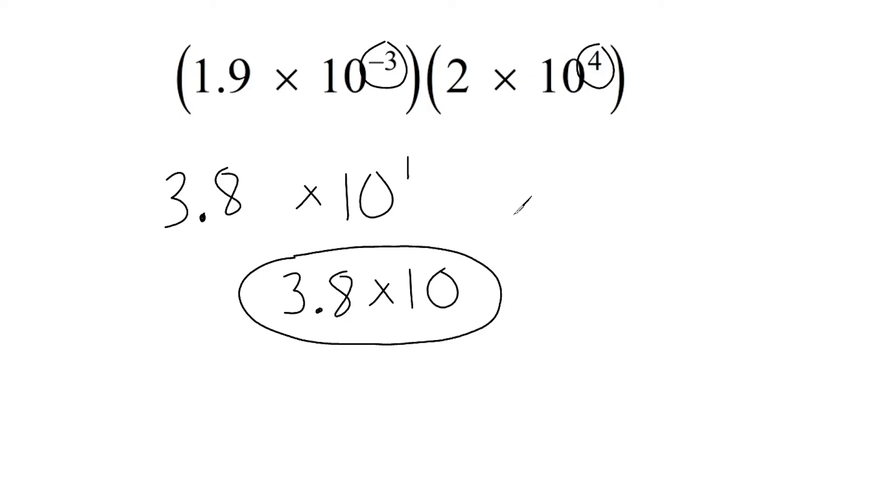So that's all there is to it. You simply just multiply the two coefficients together to get your product. And then you bring down your base 10 and add the exponents to come up with your new exponent. And if your answer isn't quite in scientific notation, you might have to make a slight adjustment at the end.